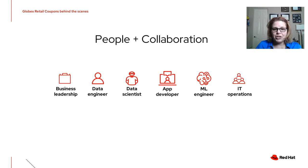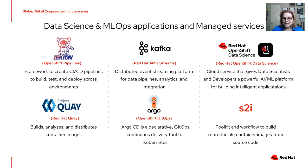Besides the people and collaboration, you also have to pick some tools. In our case, we decided on a number of data science and MLOps applications and managed services. They include Tekton, a framework to create CI/CD pipelines; Kafka, a streaming service to ingest data; Red Hat OpenShift Data Science, a platform for data scientists, developers, and MLOps folks to develop, train, and deploy models; Quay, to analyze and distribute container images; Argo, a GitOps continuous delivery tool for Kubernetes; and S2I, source to image, a workflow to deliver images via containerization within OpenShift.